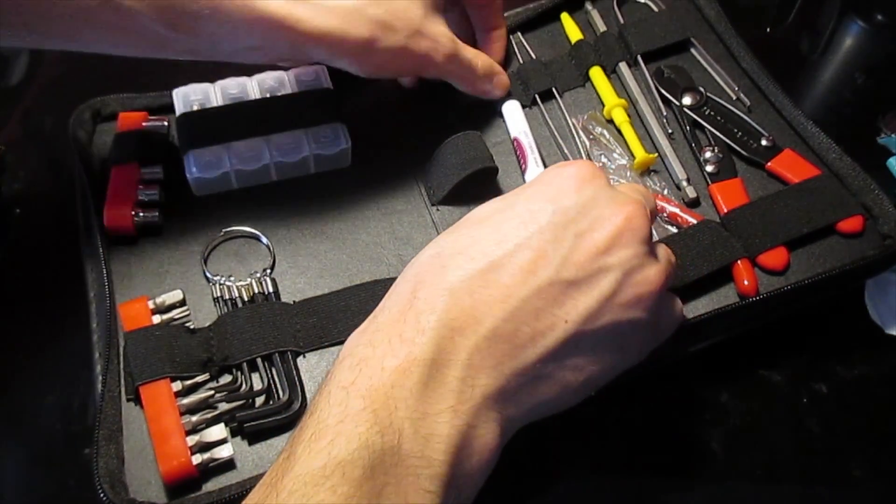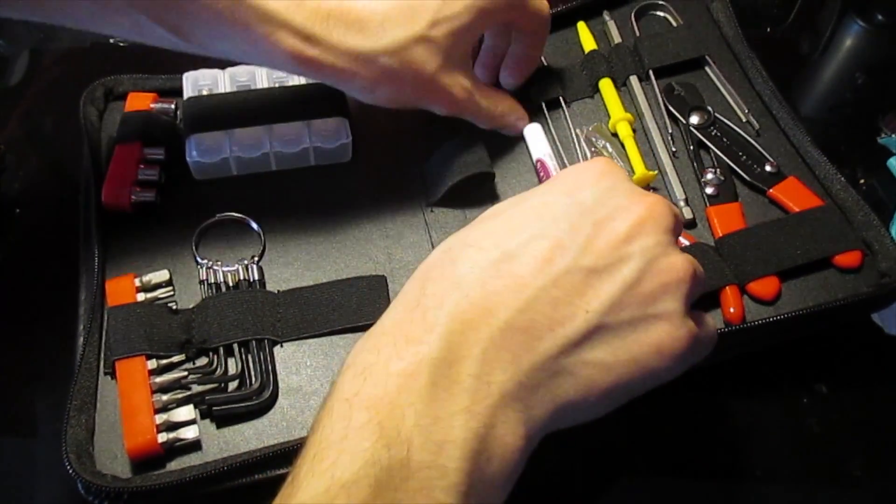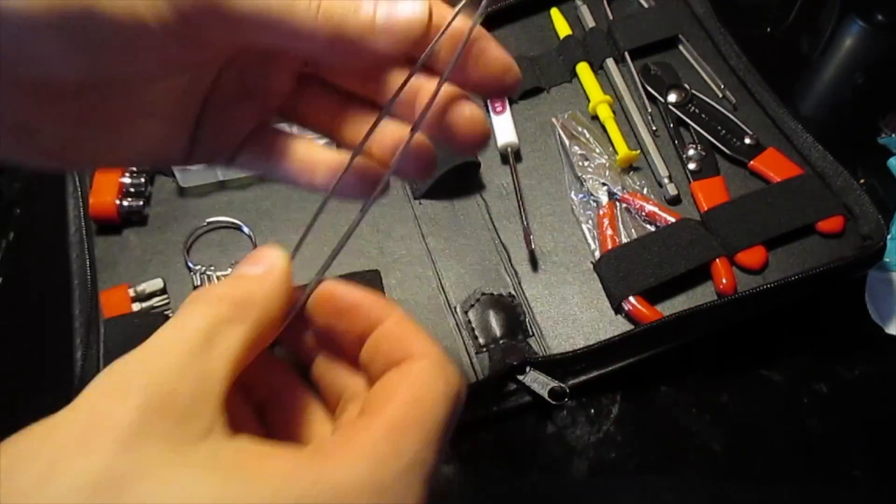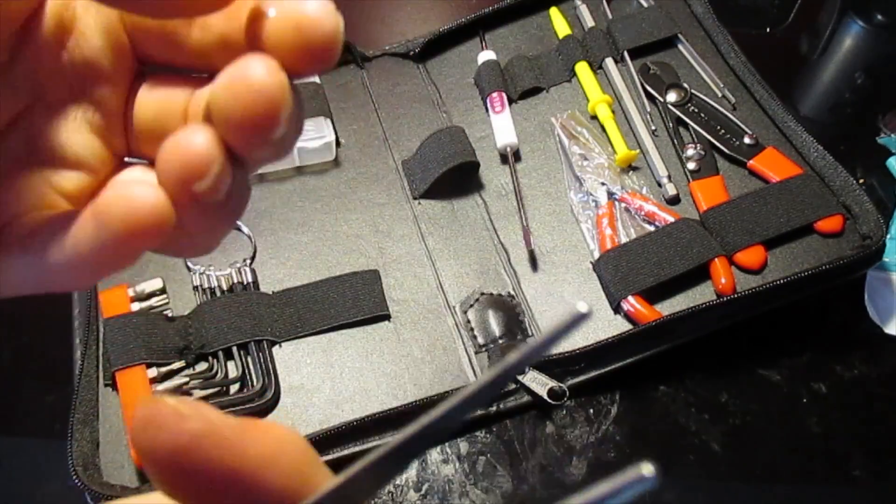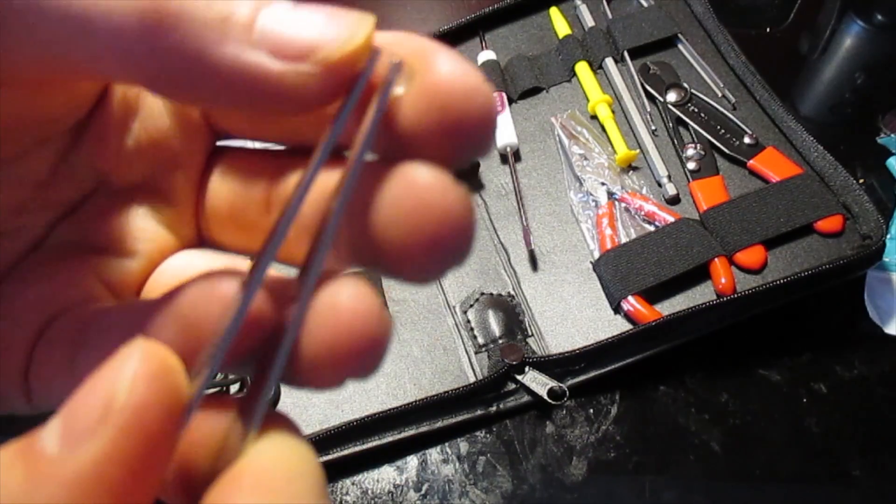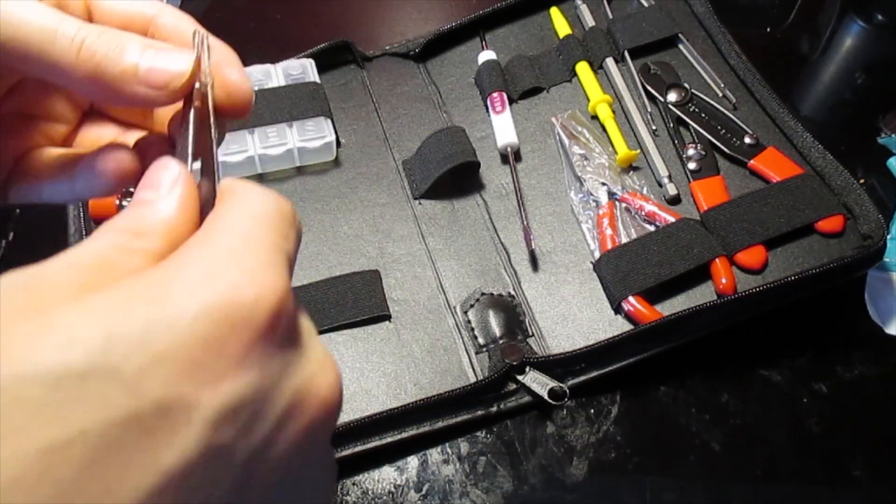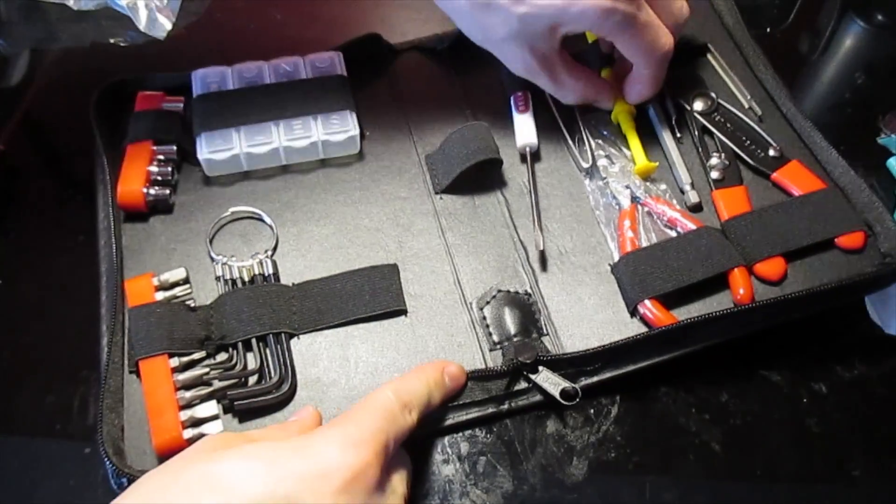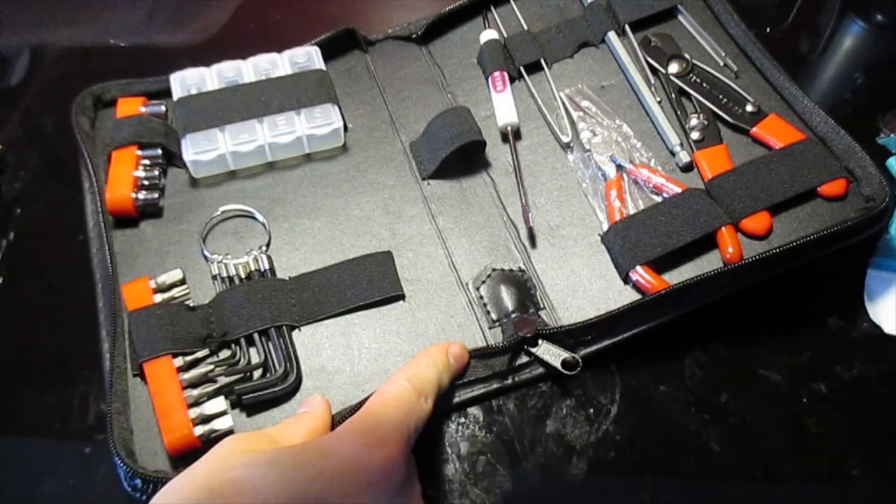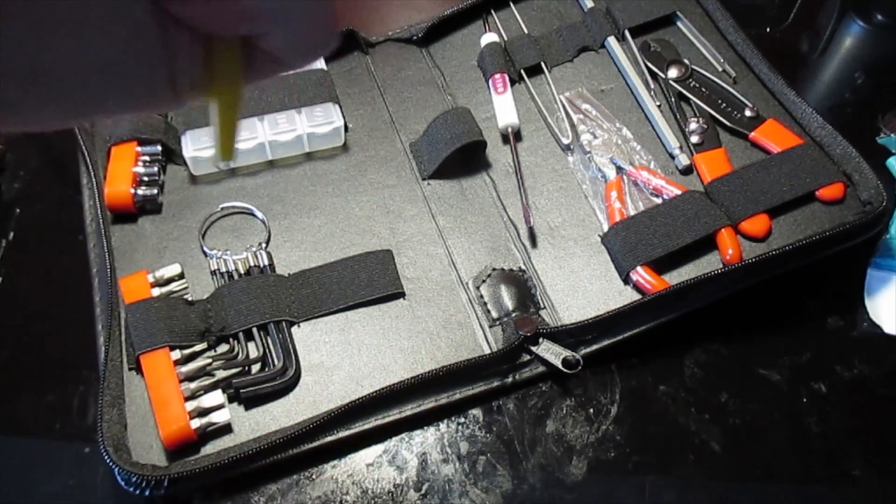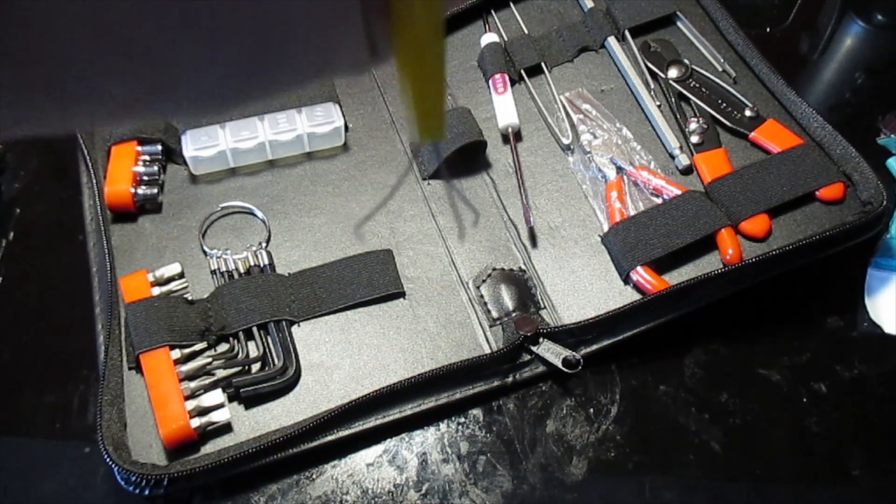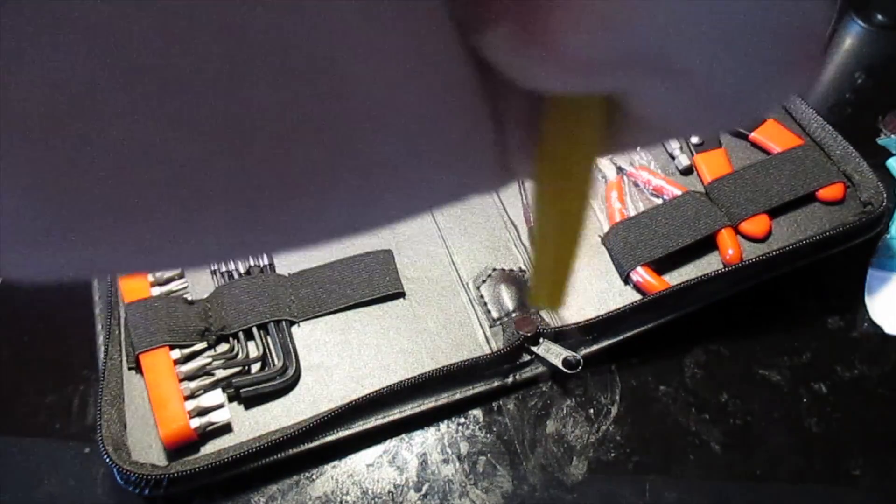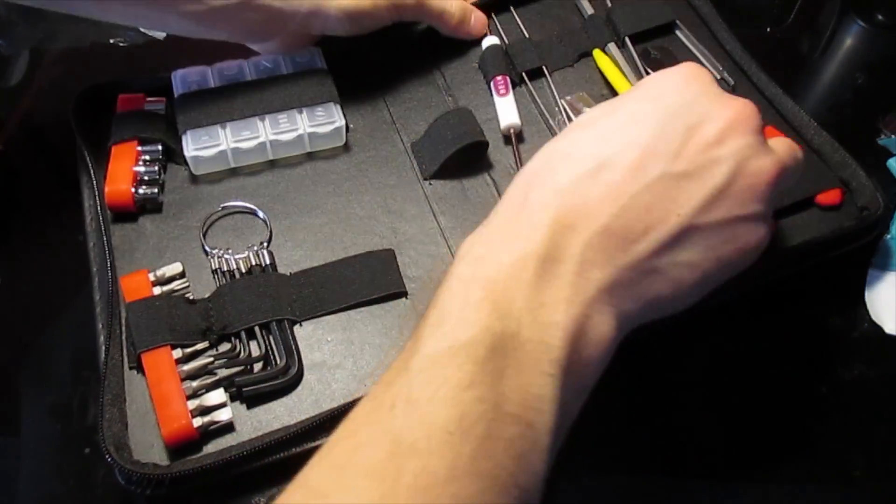Over here you have your tweezers which have this little thing on them to keep them together I'm just going to go ahead and take that off because I already know it's going to get lost eventually right here you have looks like a chip puller so you just let go of it and it pulls it back up.